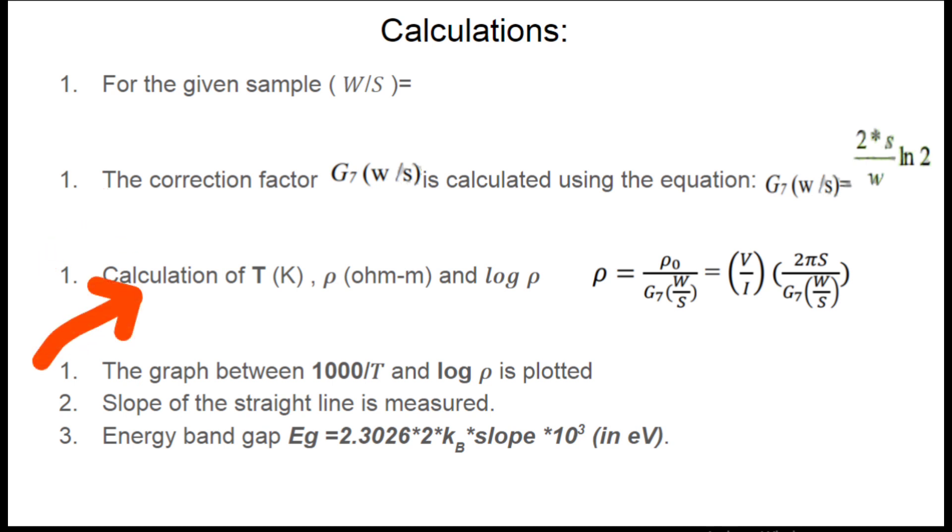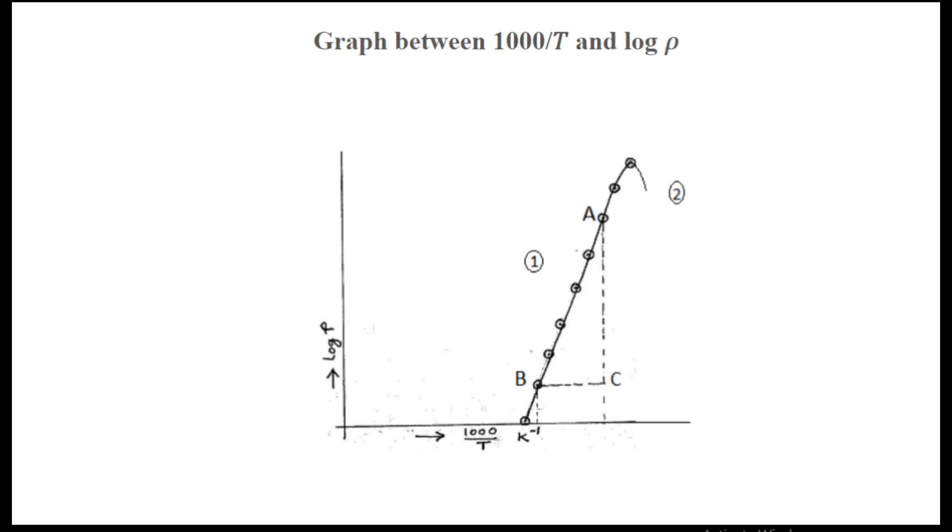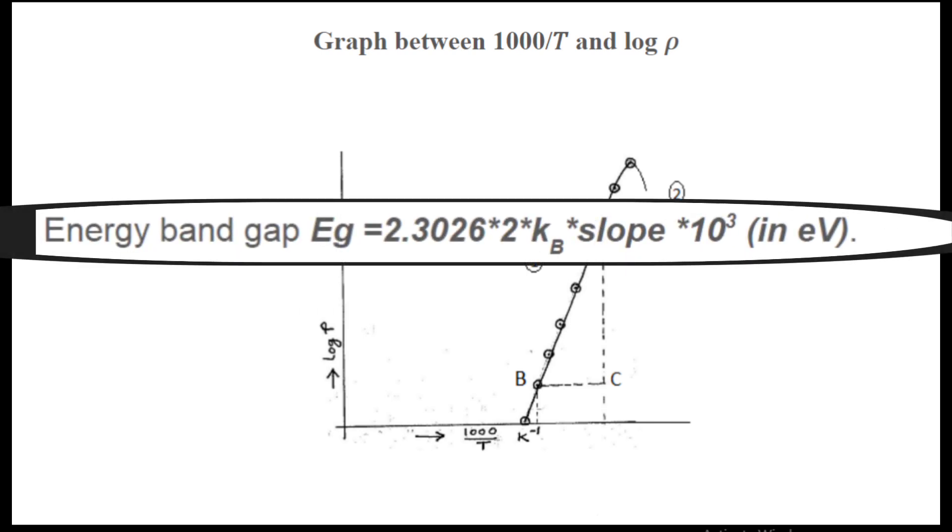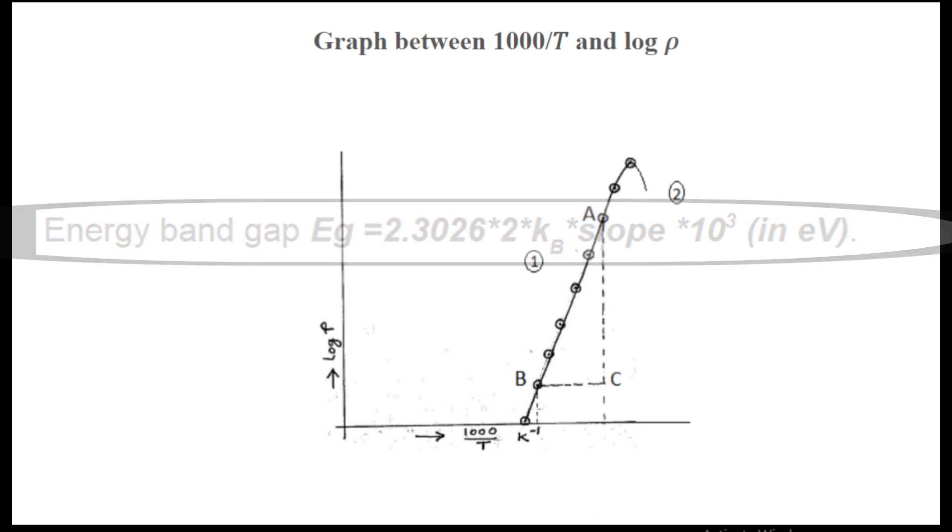Then you are going to plot a graph between 10^3/T and log rho, and that graph will be a straight line which will look something like this. You are going to find out the slope of the straight line and then put it in the equation for finding out the band gap.